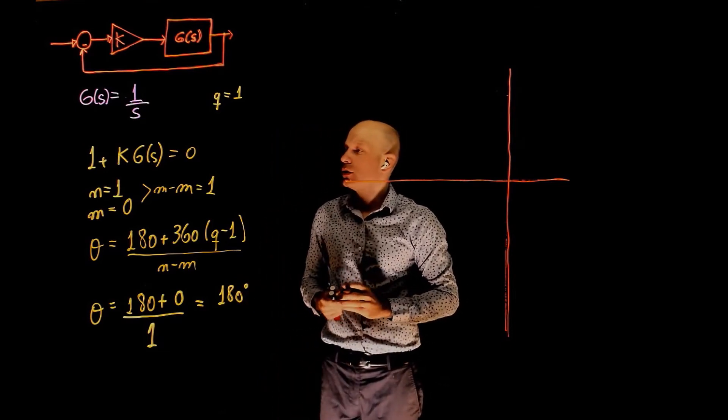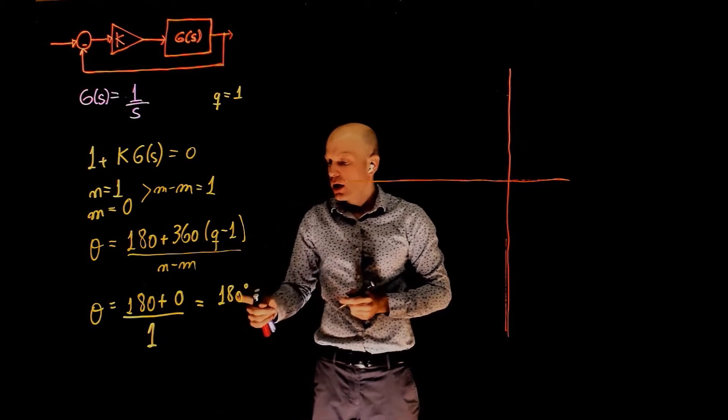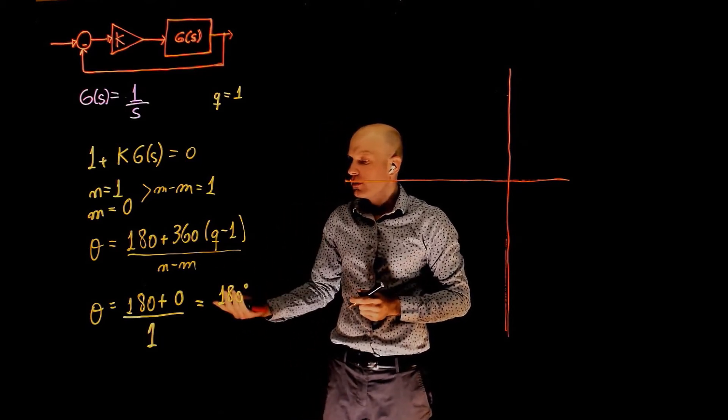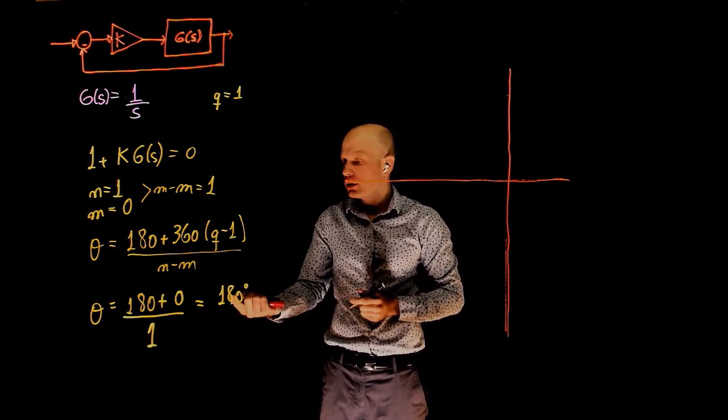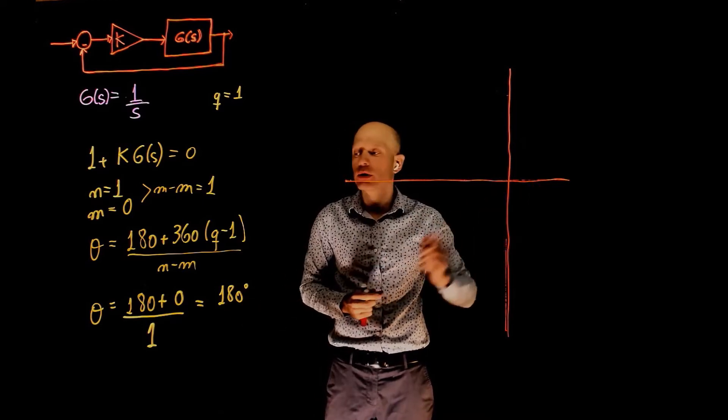So here is what we have. We know that we have one more pole than zeros, and that pole will go to infinity following an asymptote that has an angle of 180 degrees with respect to the real axis.